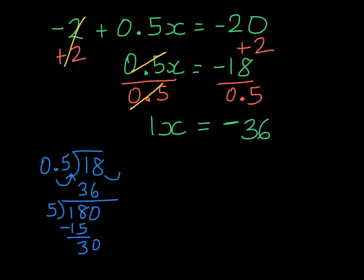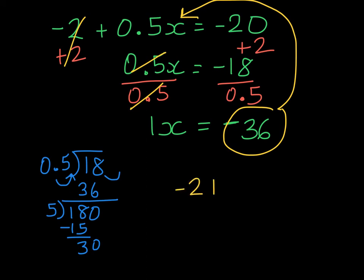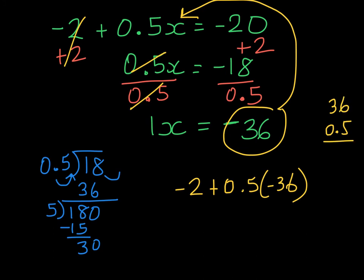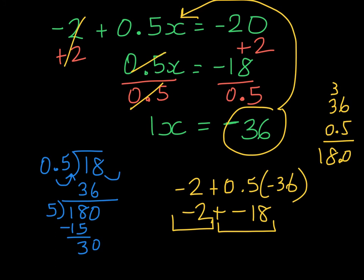At this point we can take our solution, substitute it into the original equation, and check. We have negative 2 plus 0.5 times negative 36. So 0.5 times 36 gives me 18 — that's negative 18. So I owe 2 and I owe 18, and I get negative 20, which is what the equation stated. So we've solved it correctly.